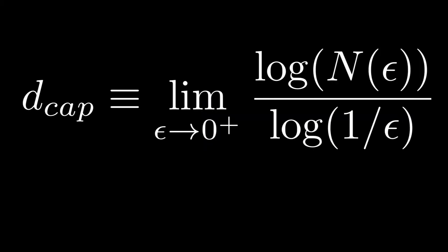Let's begin our discussion with the capacity dimension. Recall from unit 7.5 that the capacity dimension, also known as the box dimension or the box counting dimension, is defined by the following formula.